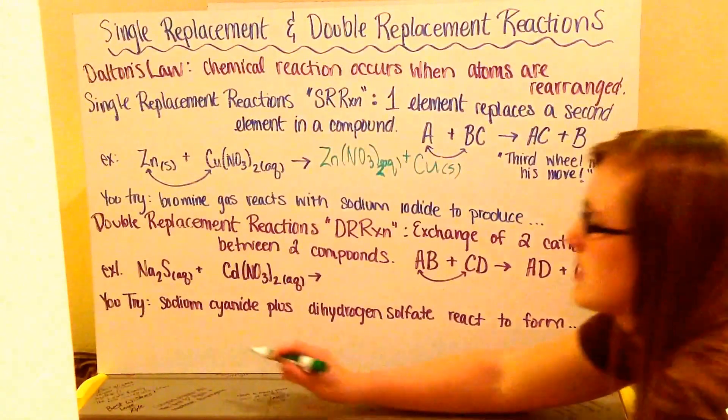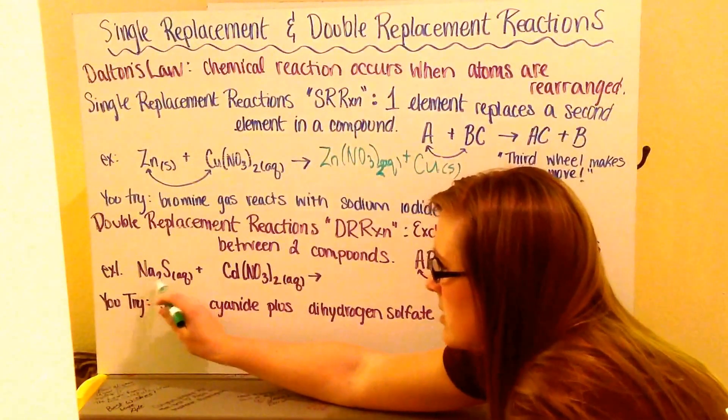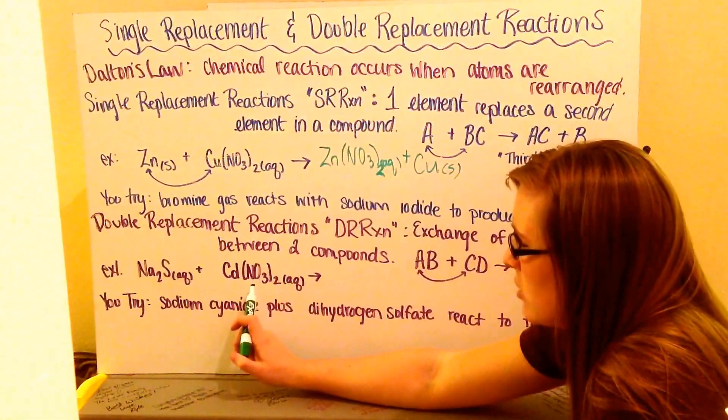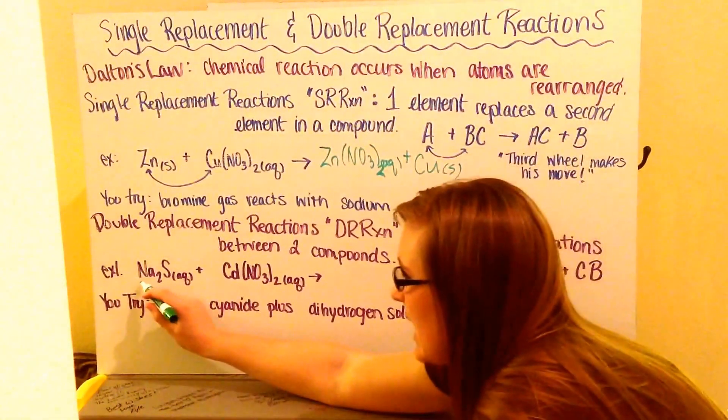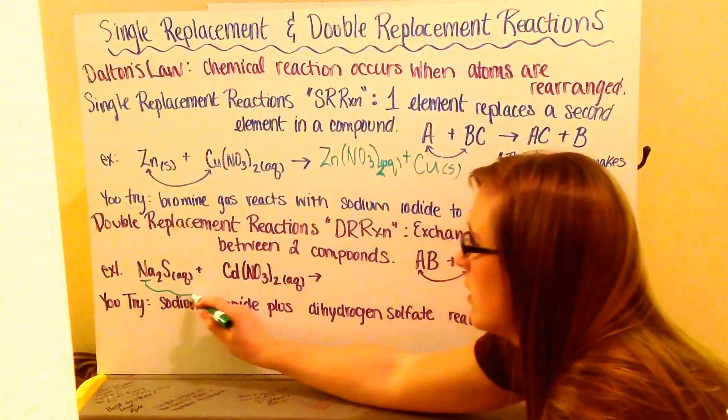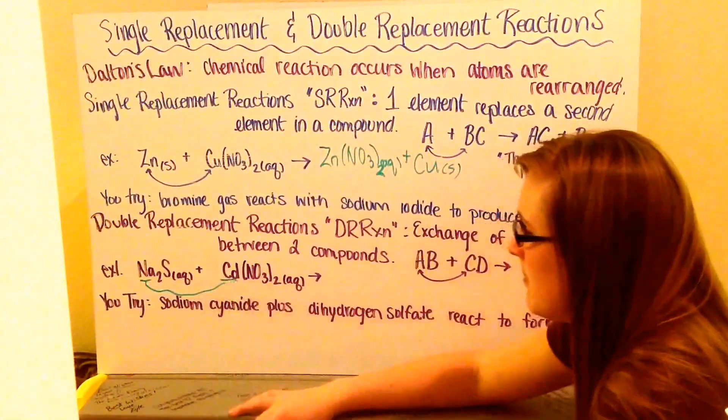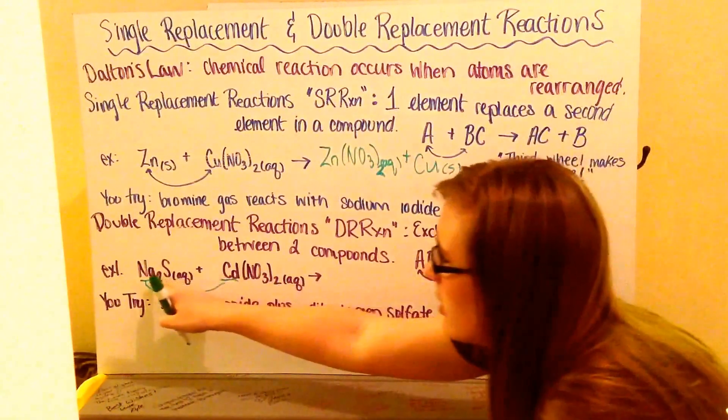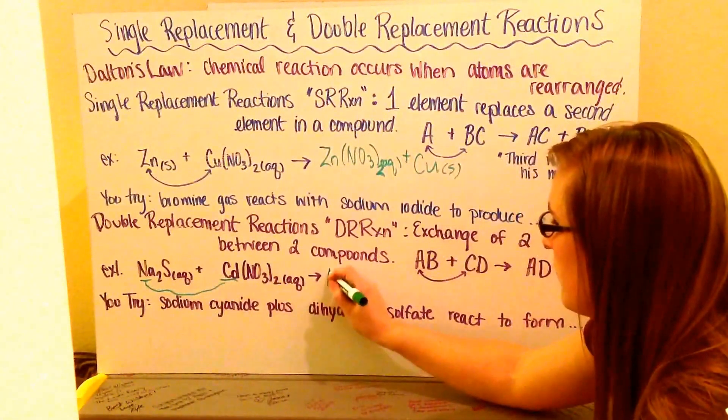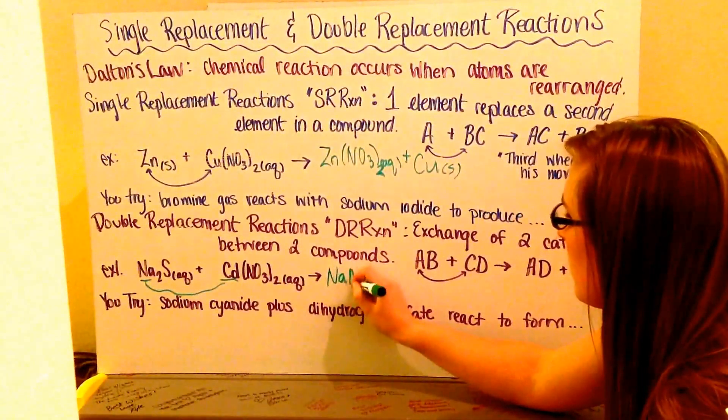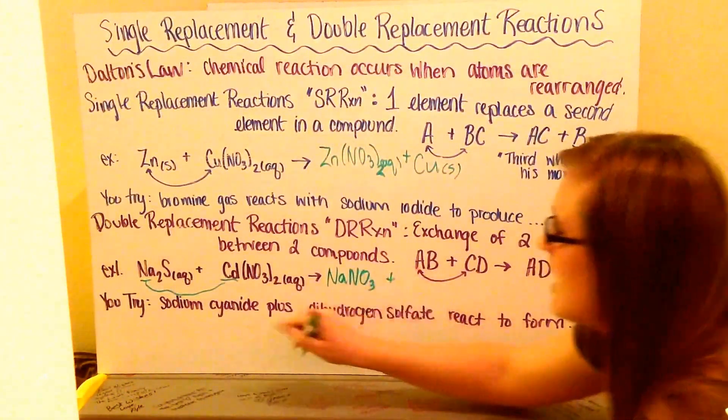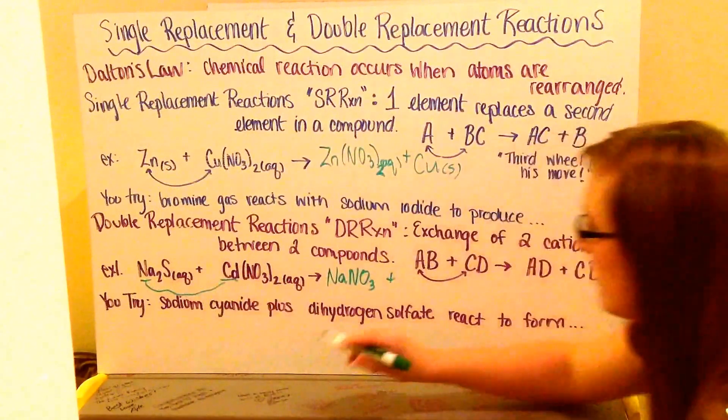So, let's put it into practice. If I have sodium sulfide with cadmium 2 nitrate reacting together, my cations is sodium and cadmium. So, they're going to switch places. Sodium is now going to be paired with my nitrate, and then my cadmium is going to be paired with my sulfur.